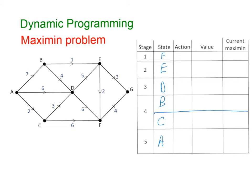Starting with F — there's only one route I can take from F, and that is directly to G. So if I was starting at F in my truck, I can carry 4 tonnes. My action is to go to G, my value is 4, and my current maxi-min is 4. So I know that if I get to F, I can carry 4 to get to G.